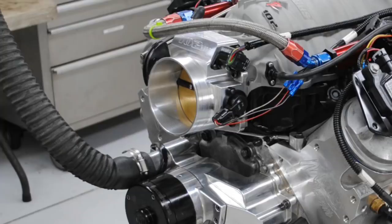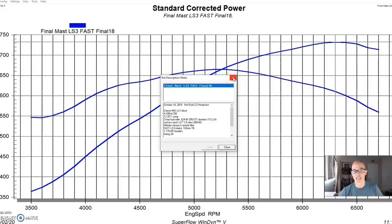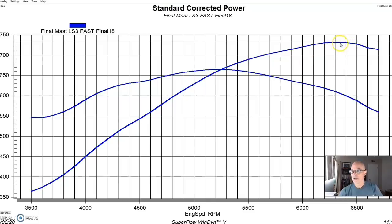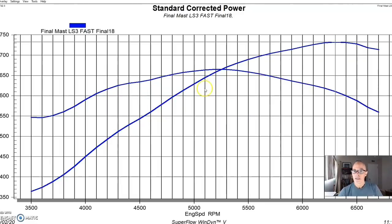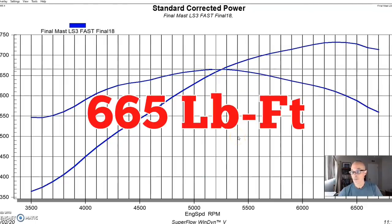We had a 102-millimeter throttle body on the Fast intake manifold. Again, as I said, we'd also run this with a factory LS3 intake, and the factory LS3 intake produced almost identical power to the Fast intake. But run with the Fast manifold on this 468-inch stroker, this combination produced 732 horsepower, and torque was up to 665 foot-pounds of torque.